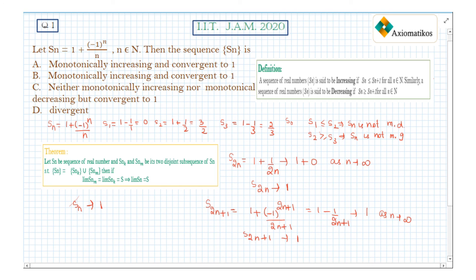Hence, option C is correct: the sequence is neither monotonically decreasing nor monotonically increasing, but it is convergent to 1.